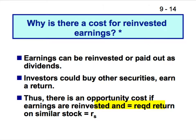Retained earnings don't have flotation costs, so they're cheaper. If a company doesn't have retained earnings and needs $100 million, they have to go to the equity markets and pay someone six or seven percent to raise that. Whereas if they have retained earnings, they can just use that directly.